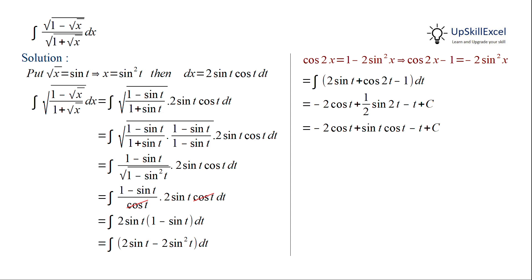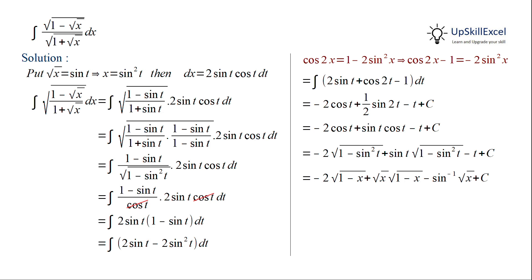Now we can convert all cos terms in terms of sin, so cos t = √(1 − sin²t). We can then substitute sin t and sin²t back in terms of x, giving us the result: −2√(1 − x) + √x · √(1 − x) − sin⁻¹(√x) + c.